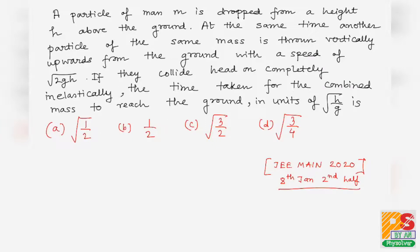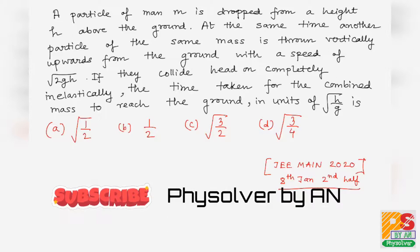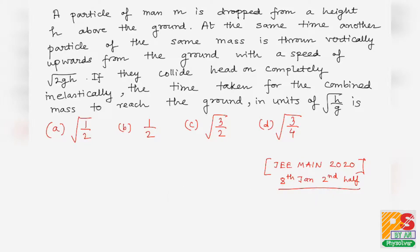Hello students. The question is: a particle of mass m is dropped from a height h above the ground. At the same instant, another particle of the same mass is thrown vertically upwards from the ground with a speed of √(2gh). If they collide head-on completely inelastically, the time taken for the combined mass to reach the ground in units of √(h/g) is required.